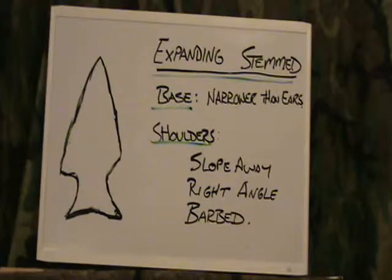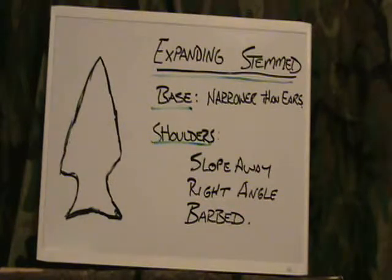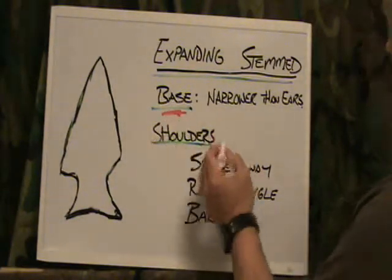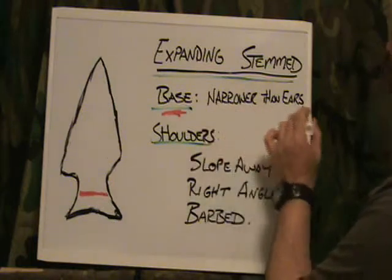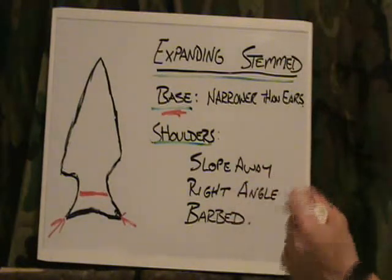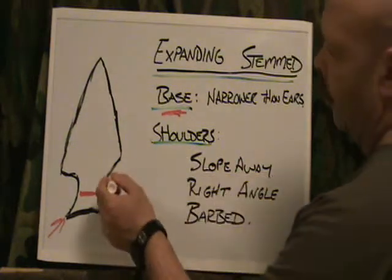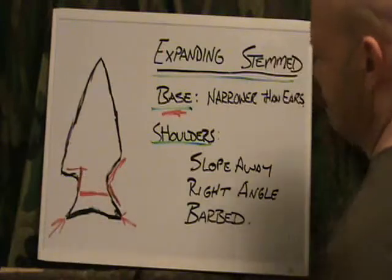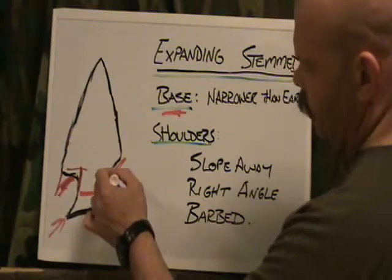The last of the stemmed points is going to be your expanding stemmed point. What that essentially means is that on the base, the base itself is narrower than the ears — these being the ears. Your shoulders can slope away, just like this. They can be at a right angle. They can also be barred, although I have not seen too many point styles like that.